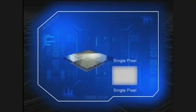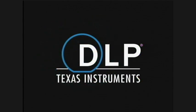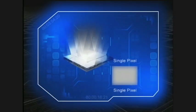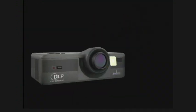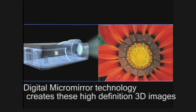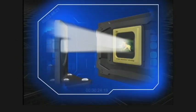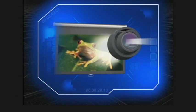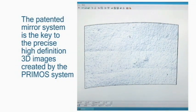The high-resolution images are produced using the latest DLP technology developed by Texas Instruments. The technology employs the digital micromirror device used in DLP high-definition televisions and is incorporated into Primos instruments. The patented mirror system of the DLP that delivers amazing HD-resolution television pictures is the key to the precise, high-definition 3D images created by the Primos.